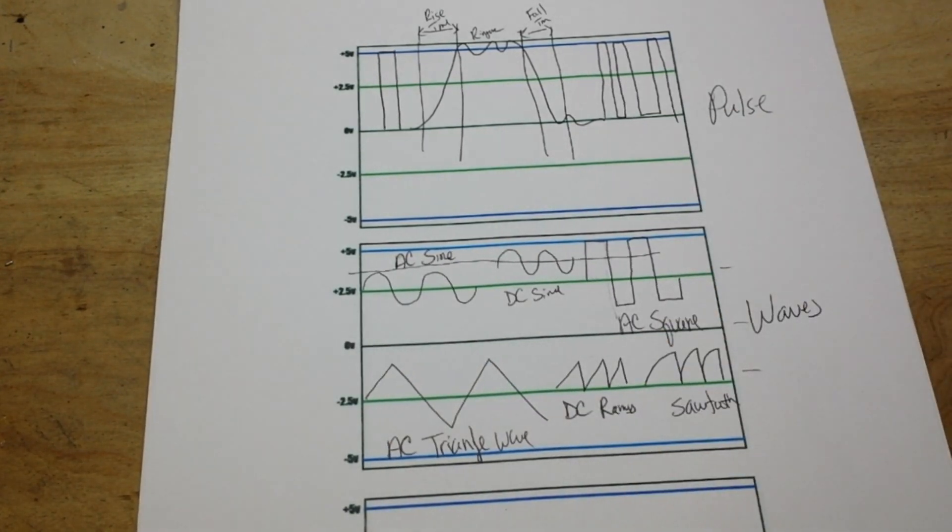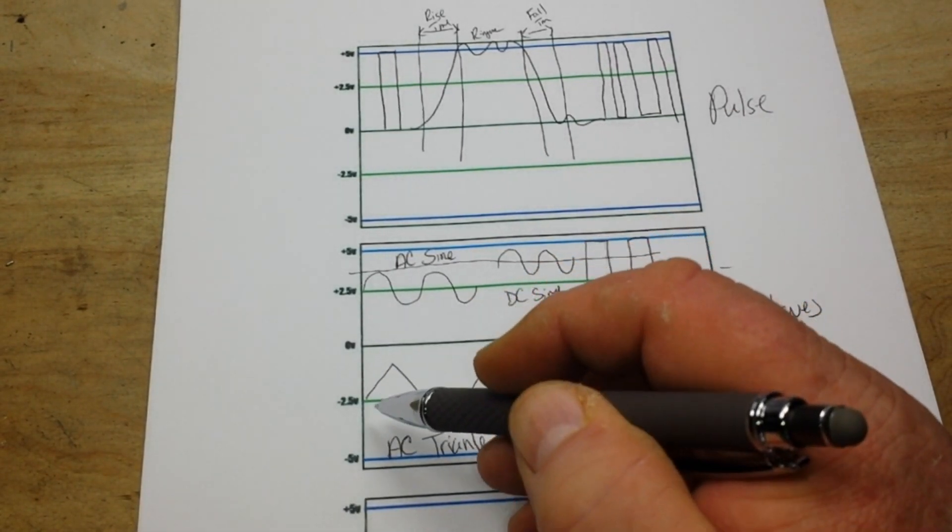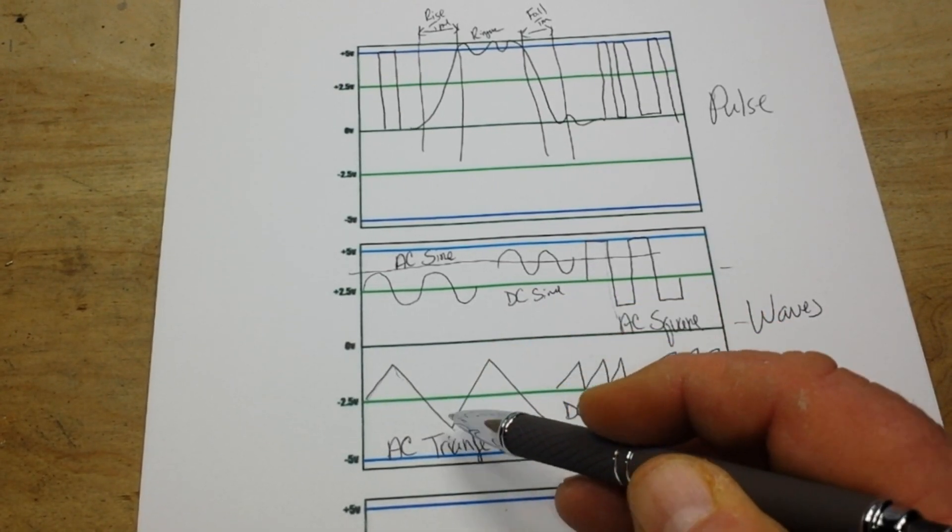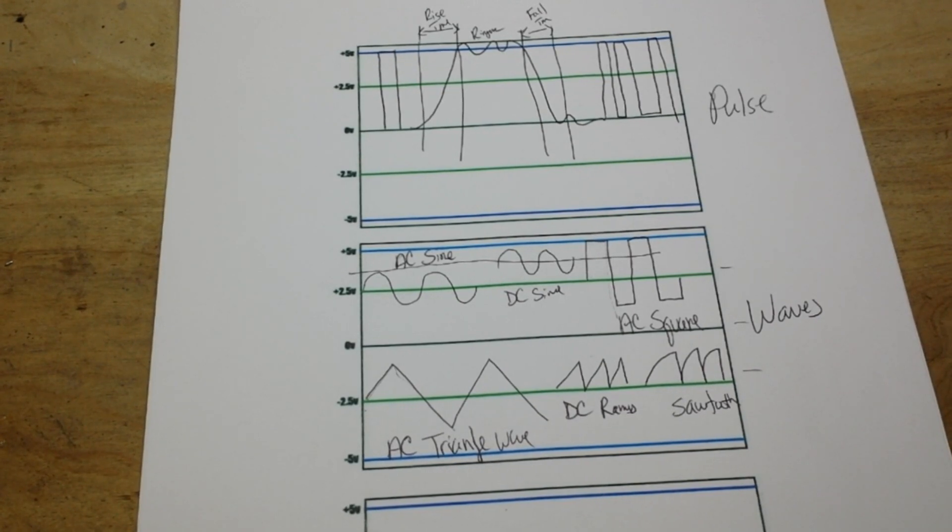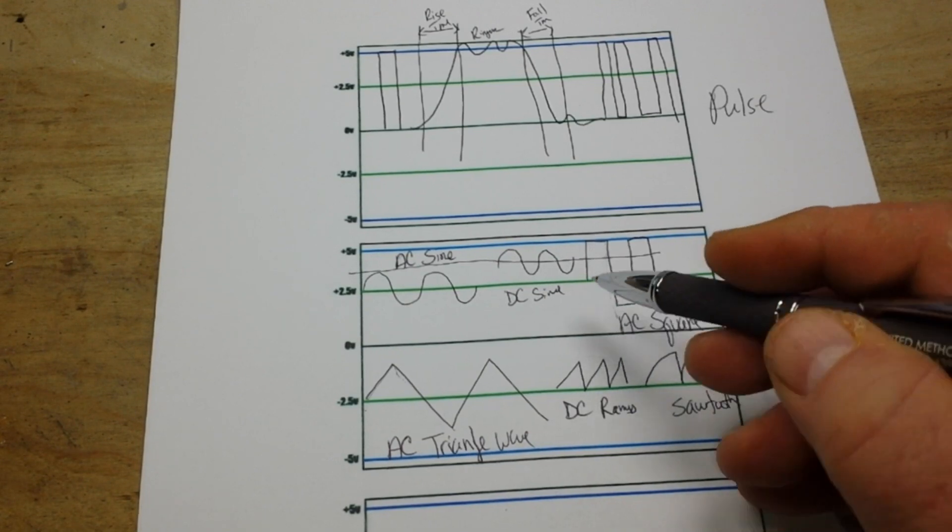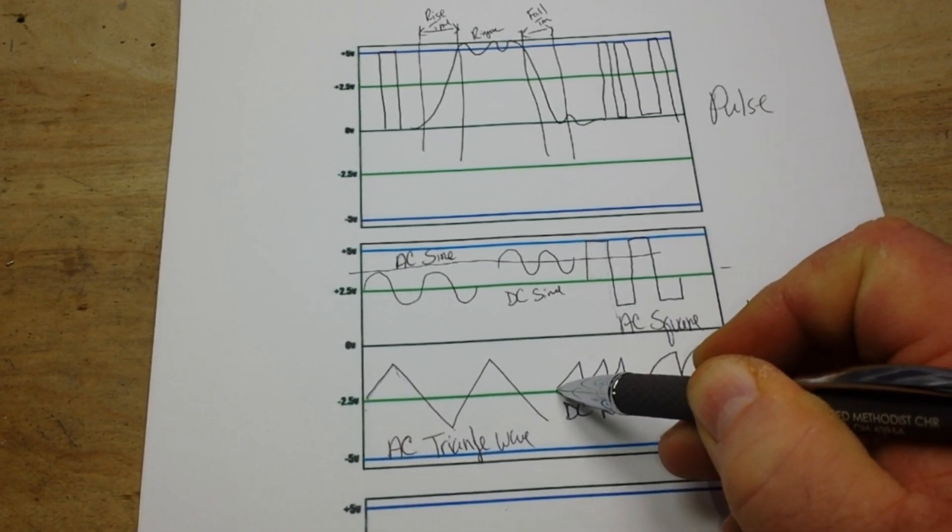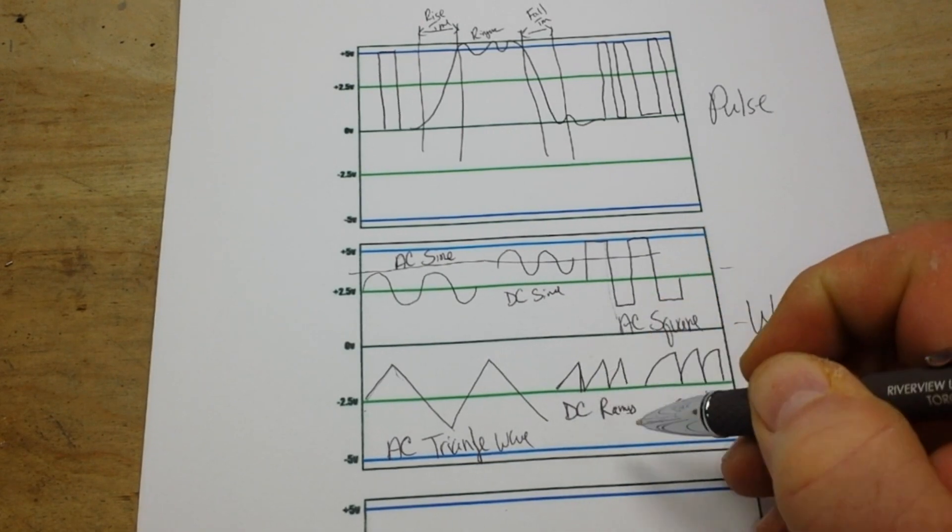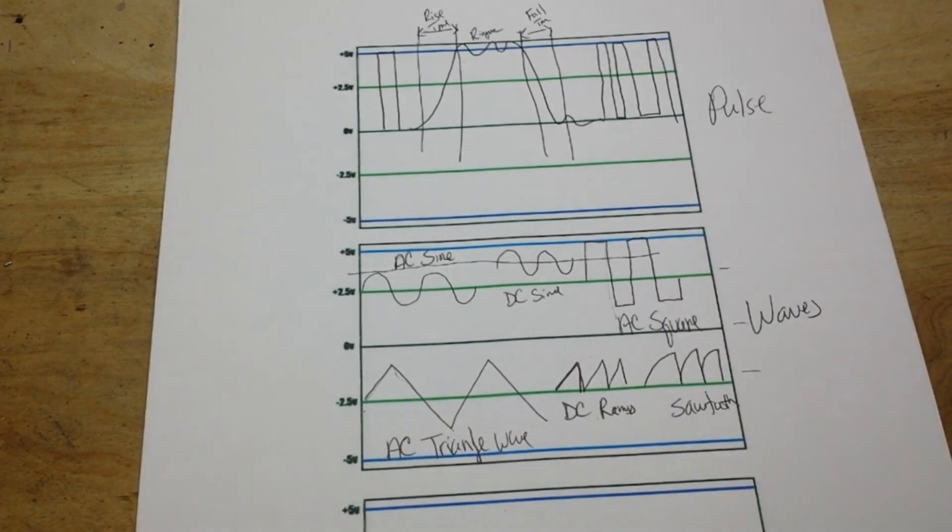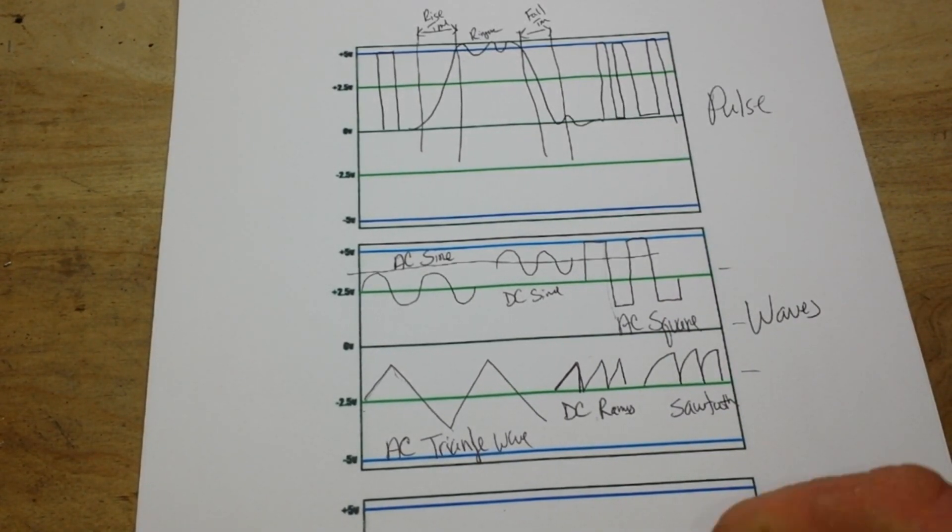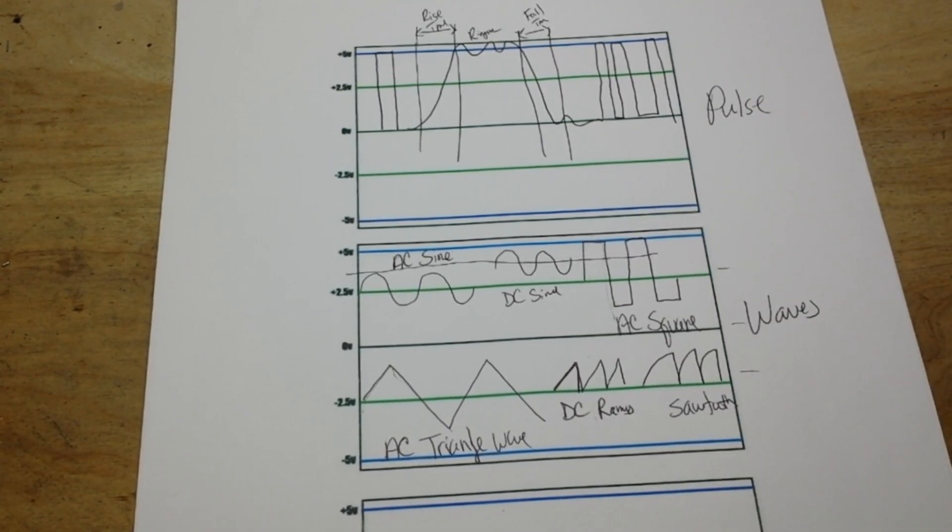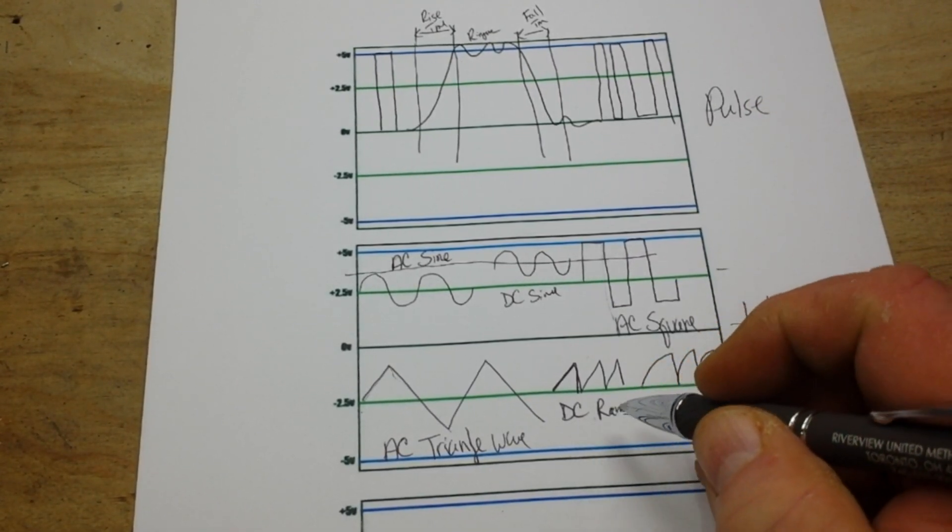Now the AC triangle wave has a linear rise and a linear fall, also oscillating about our zero point. Now the DC ramp wave has a linear rise time and almost instantaneous fall. Okay, so what we're getting here is almost a mixture of the pulse and the triangle wave, and it can go in either direction. So in this case you would have an almost instantaneous on and a linear fall to off.